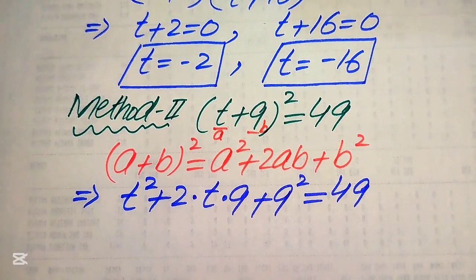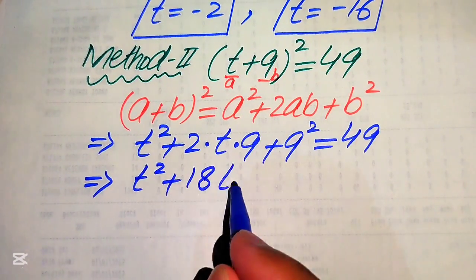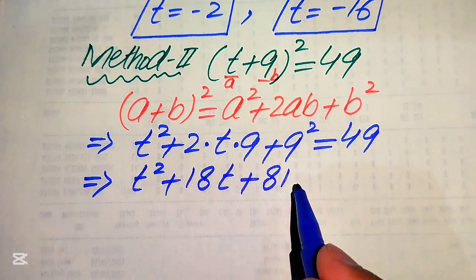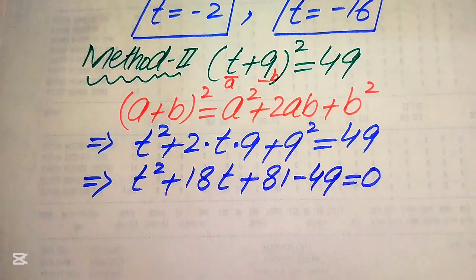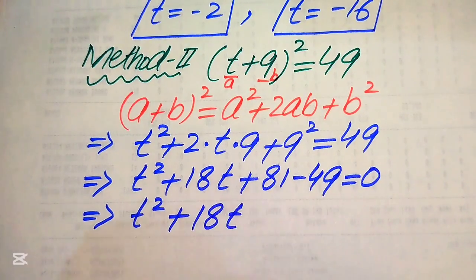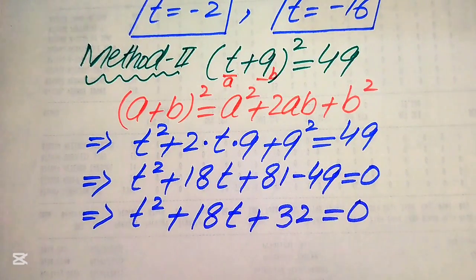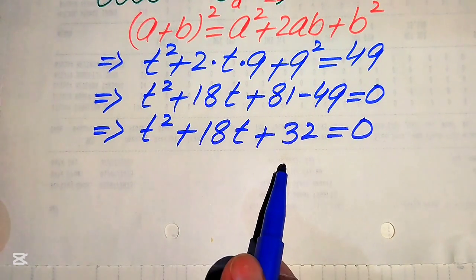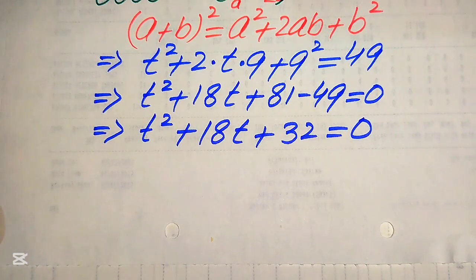Expanding using the formula, we get t² + 2(t)(9) + 9² = 49, which simplifies to t² + 18t + 81 = 49. Moving 49 to the left-hand side gives t² + 18t + 81 - 49 = 0, which simplifies to t² + 18t + 32 = 0. This is a quadratic equation in t, solvable by factorization, completing the square, or the quadratic formula.